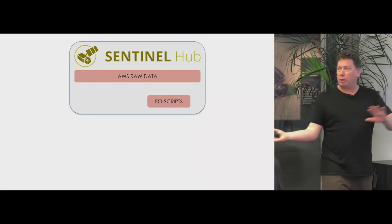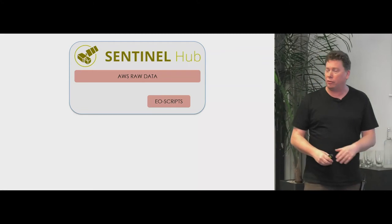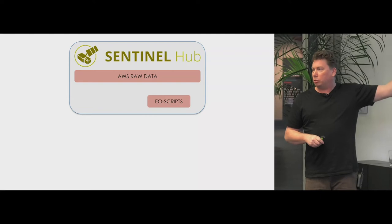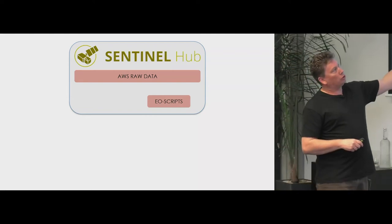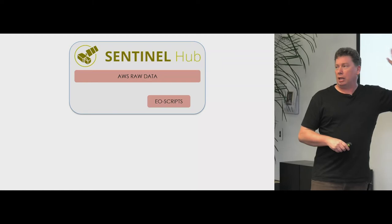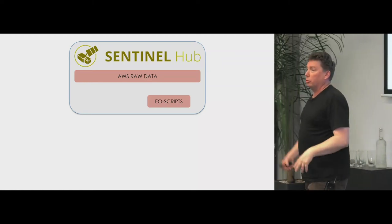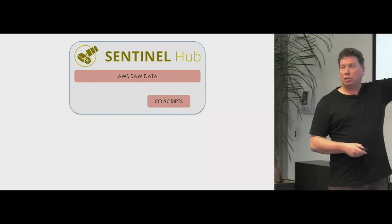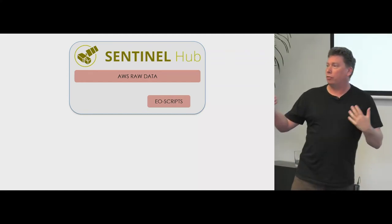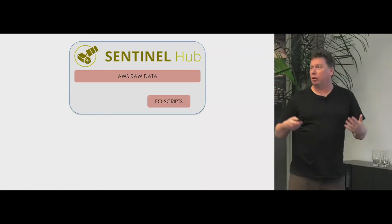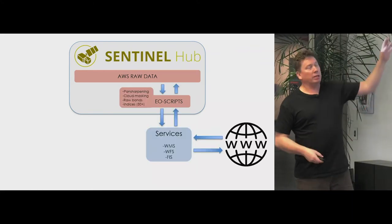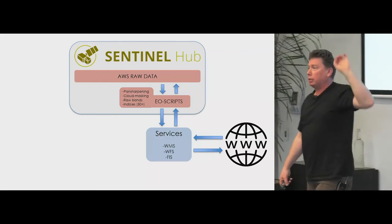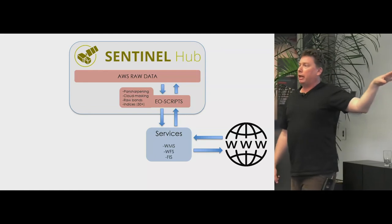Sentinel Hub works in this way: they have a whole bunch of data — Landsat for all of Europe, and Sentinel data from late 2015 onwards — all coming down to an AWS server which you can access. The cool thing is that at their server end you can write your own scripts, so we can code up back-end stuff, do indices, do pan sharpening, and that's basically handed out directly as a service to a website.